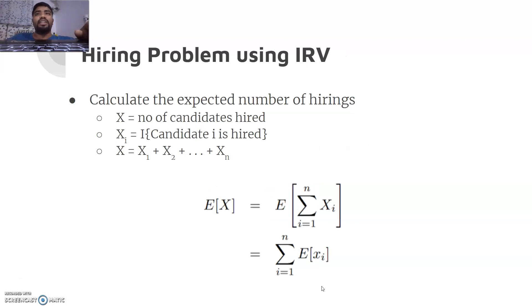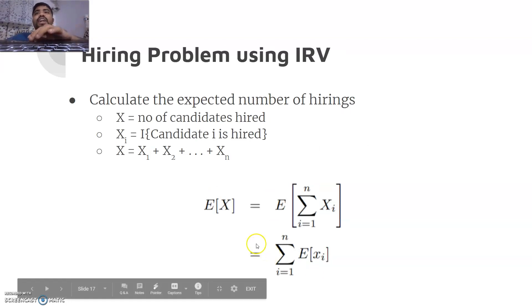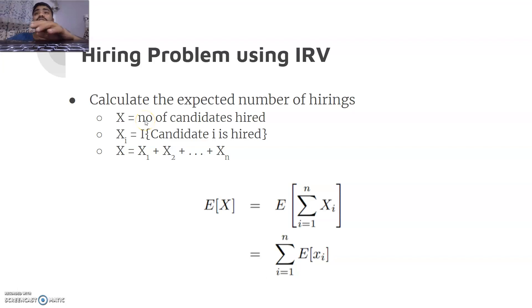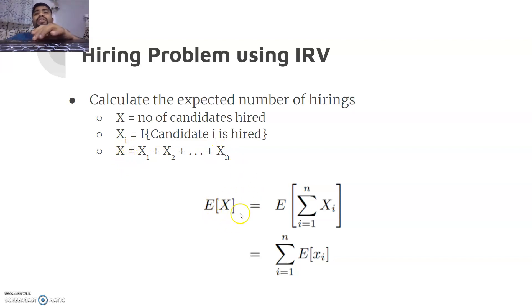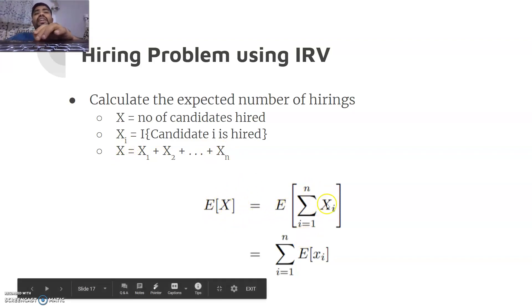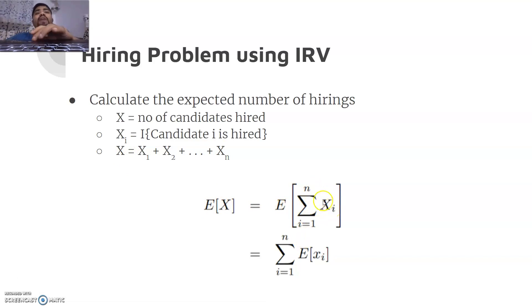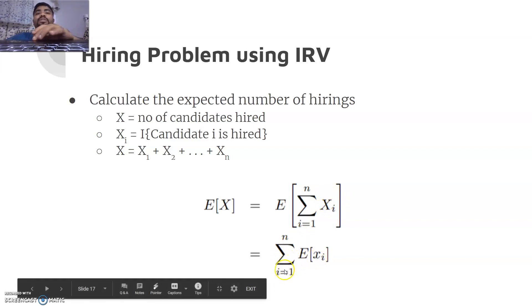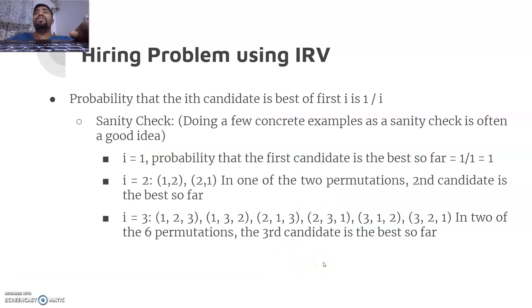Similarly, we apply indicator random variables to the hiring problem. Instead of the number of times we got heads in a coin toss, we have the number of candidates hired. X_i indicates whether the i-th candidate was hired. We work through all n candidates: E[X] = E[Σ X_i] = Σ E[X_i], and we need to find E[X_i] for each candidate.